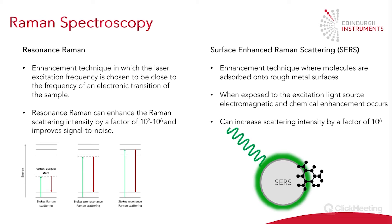It's accepted that both electromagnetic enhancement and chemical enhancement play a role. Electromagnetic enhancement has a much more significant effect and originates from the local field enhancement and the re-radiation enhancement. Chemical enhancement has a much lesser effect and is molecule dependent. It arises due to the interaction of the molecule with the substrate, causing a modification of the polarisability of the molecule.